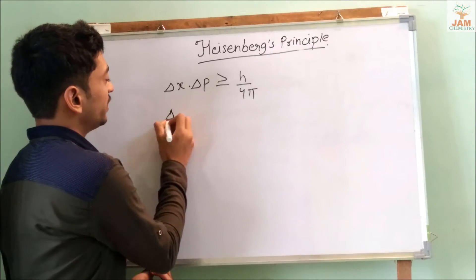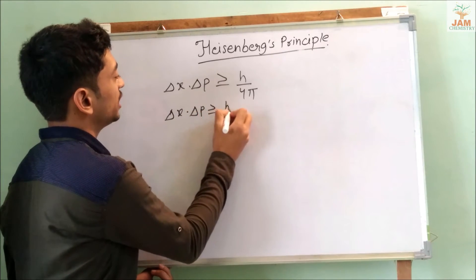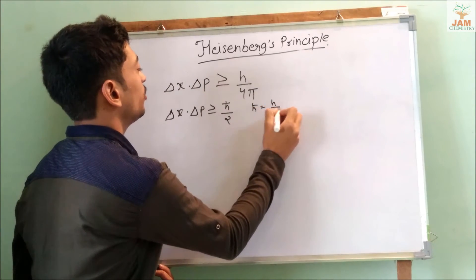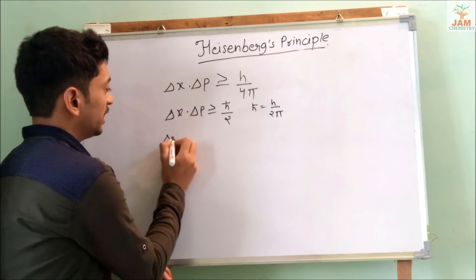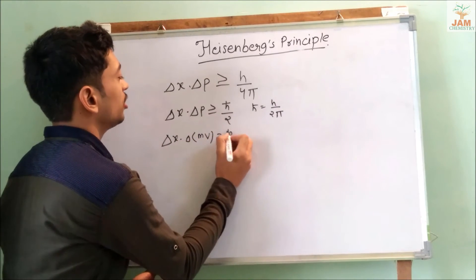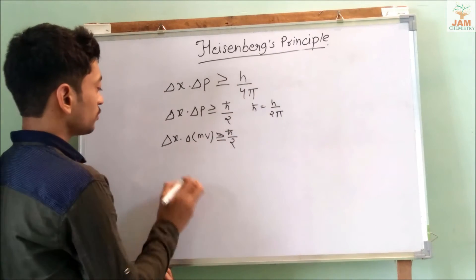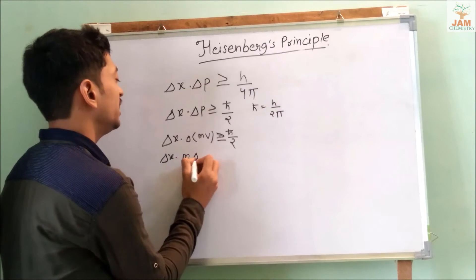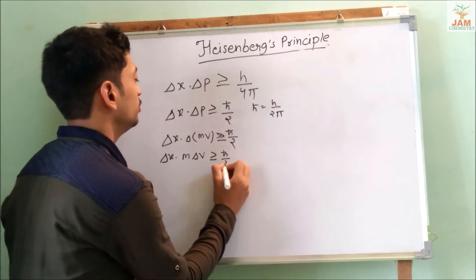This can also be written as delta x into delta P is greater than or equal to h-cross upon 2, where h-cross is equal to h upon 2 pi. So delta x into delta P equals m times delta V, which gives delta x into m delta V is greater than or equal to h-cross upon 2.